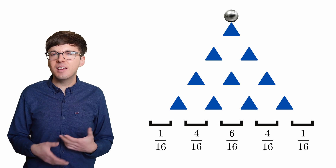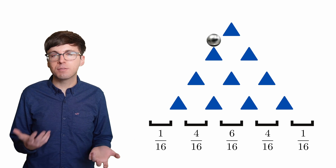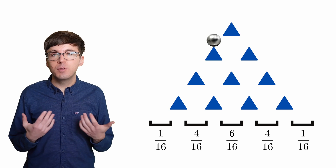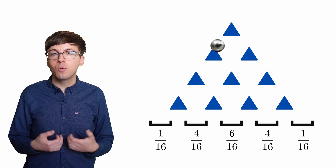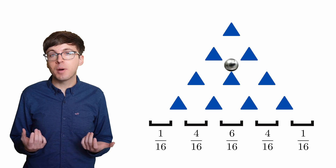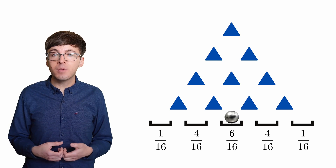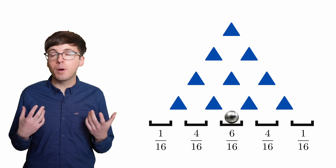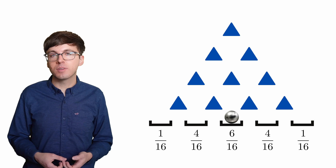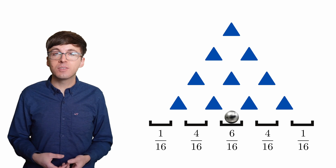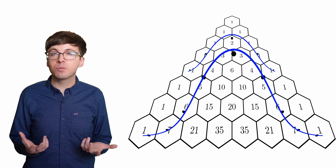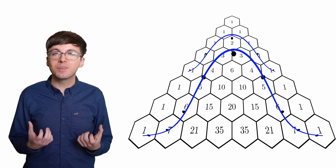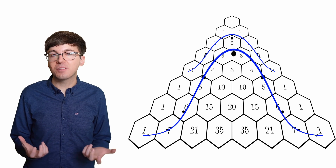Each time the ball hits a peg, it has a 50-50 chance of moving left or right — it's essentially completely unpredictable. But if we view the ball's entire trip, we can make meaningful predictions about where it will end up. The central limit theorem applies not just to binomial distributions but to a much wider class of distributions. It's at the heart of a lot of statistical analysis and shows how random events over time can form predictable patterns. This essential result is hidden in plain view in Pascal's triangle.